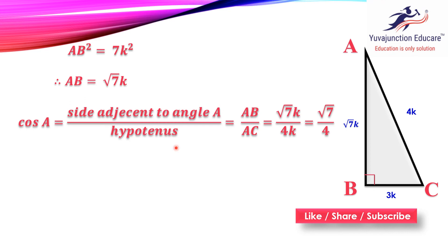Cos A is the side adjacent to angle A upon hypotenuse. The side adjacent to angle A is AB, and the hypotenuse is AC. So cos A = AB upon AC = √7k upon 4k. The k cancels, and you get cos A = √7 upon 4.